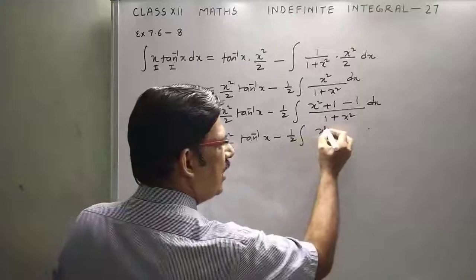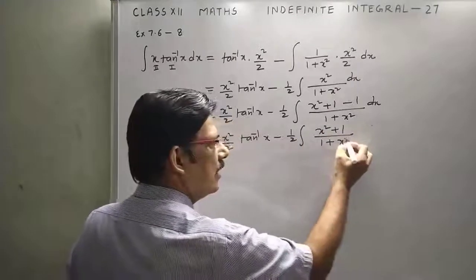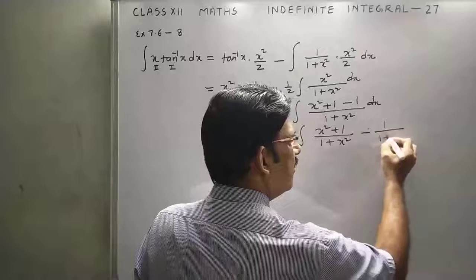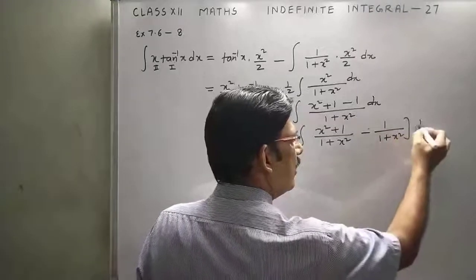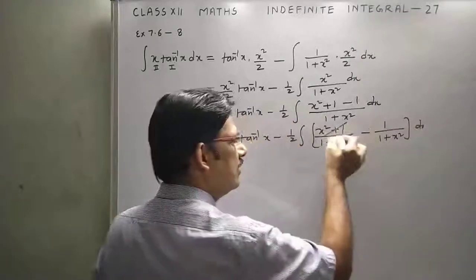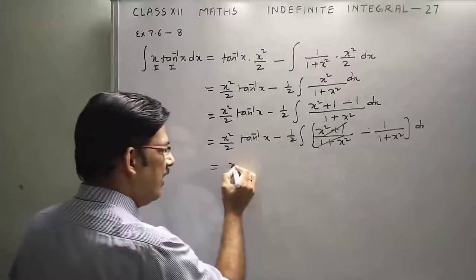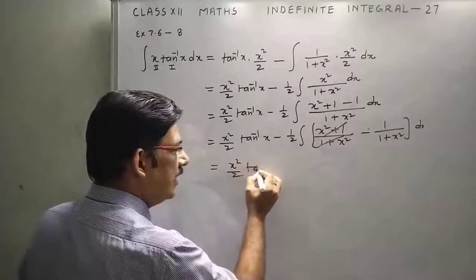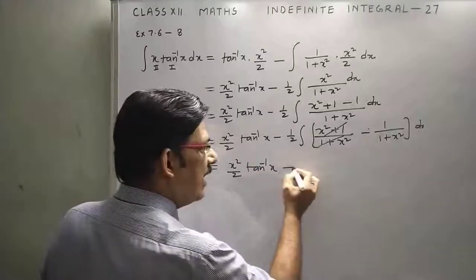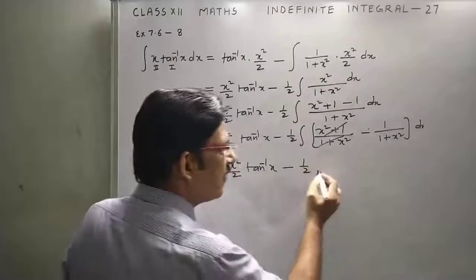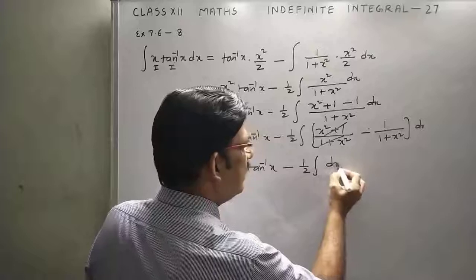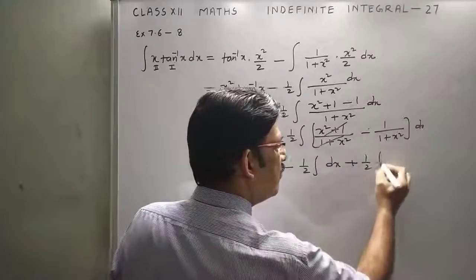You can cancel out this or you can divide also. Now we have X square upon 2 tan inverse X minus 1 by 2, this integration of DX, minus minus plus, 1 by 2 integration of 1 upon 1 plus X square.